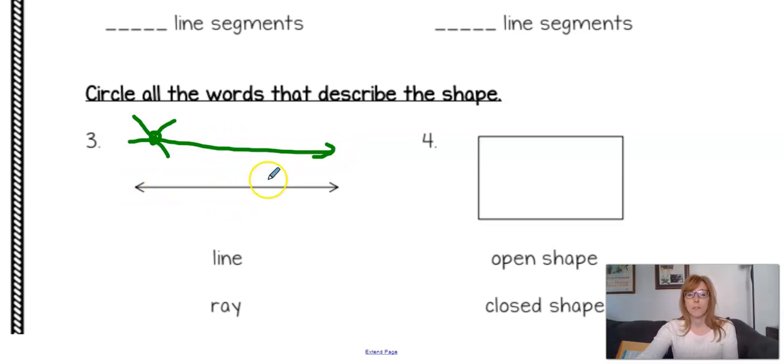So hopefully you see here this has arrows at both ends which means it continues on and so that would be a line. This is a ray.